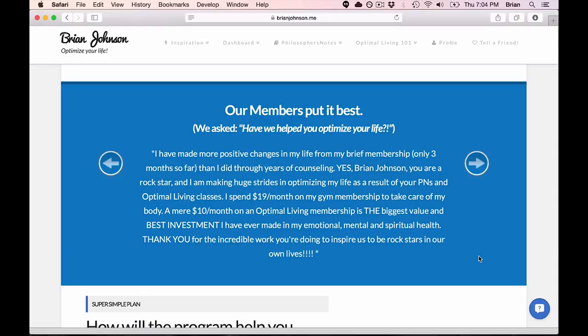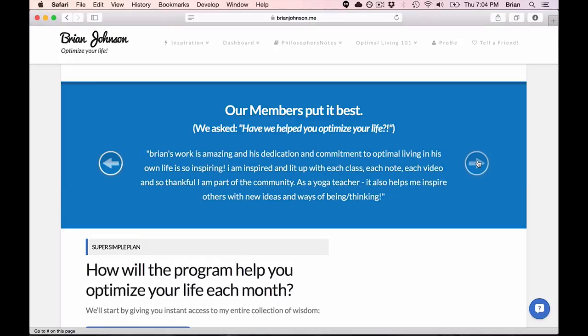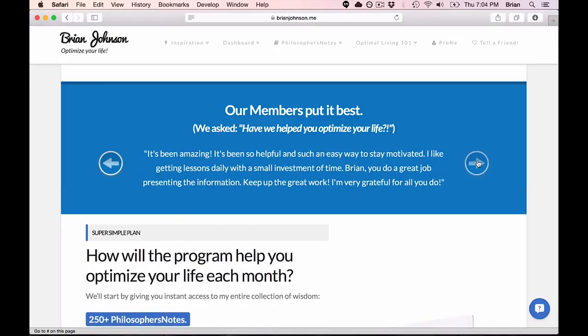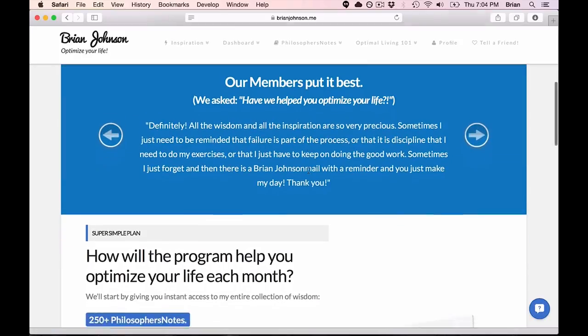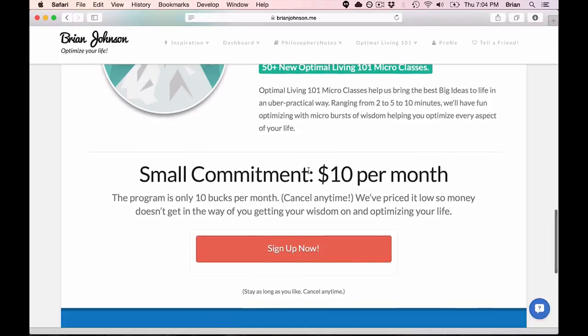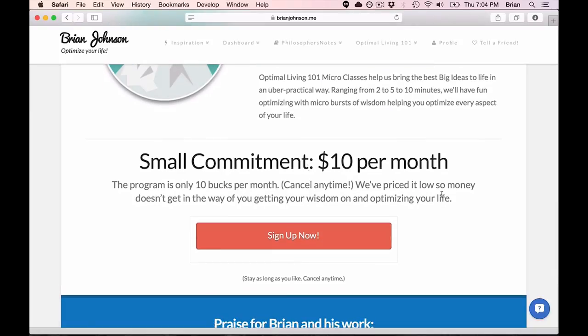And this is the kind of response we've gotten so far from our members. It's pretty neat. I've made more positive changes in my life for my brief membership only three months so far than I did through years of counseling. Yes, Brian Johnson, you are a rock star. Thank you very much. That's very kind of you. And I'm making huge strides in optimizing my life as a result of your philosopher's notes and optimal living classes. I spend $19 a month on my gym membership to take care of my body. A mere $10 a month on an optimal living membership is the biggest value and best investment I've ever made in my emotional, mental, and spiritual health. Thank you for the incredible work you're doing to inspire us to be rock stars in our own lives. Unbelievably inspiring and humbling. In 24 hours, we received hundreds of extraordinary notes from members around the world. So there you go. That's a quick look at what we're up to. $10 a month. Hope to astonish you.